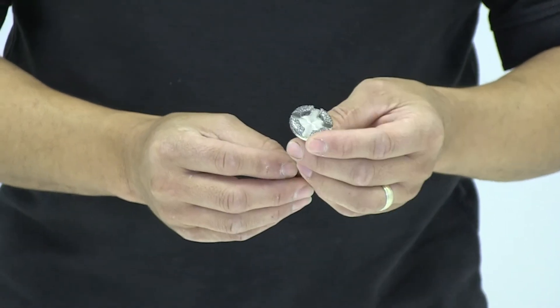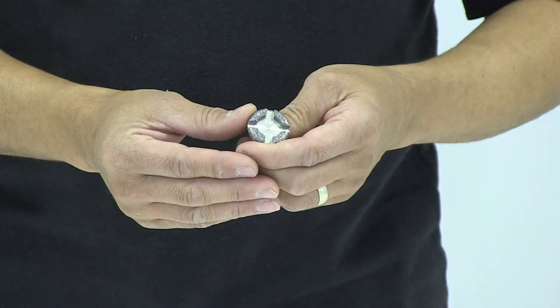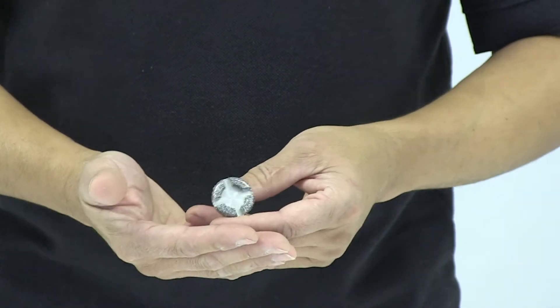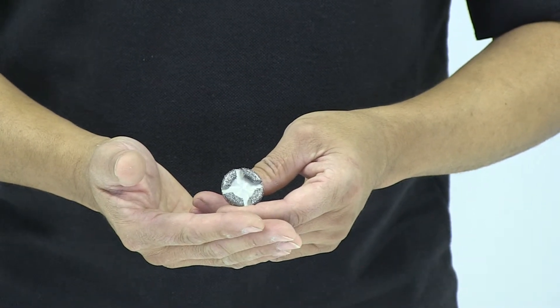This is a 36-44 grit diamond. This is used for heavy material removal, as well as heavily filled composite materials, so materials with powders.